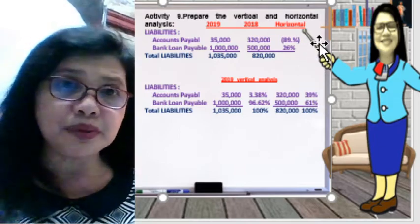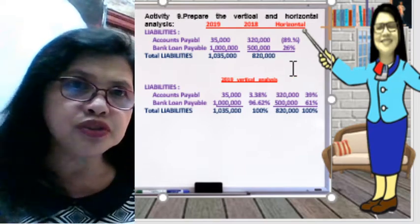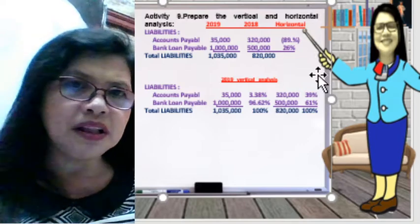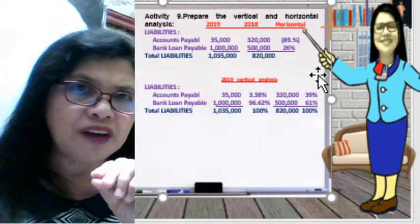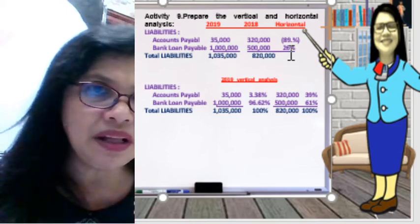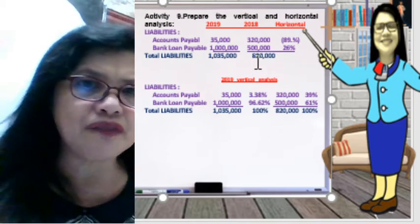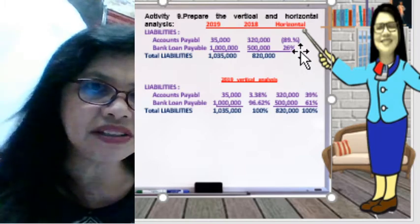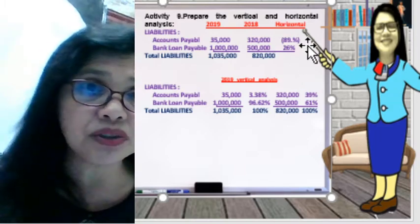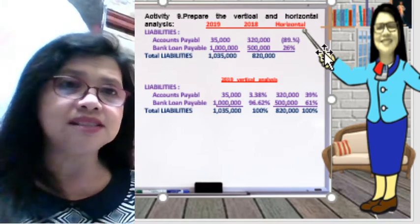For bank loans payable, we compare current year 1,000,000 minus previous year 500,000, divided by 500,000, which gives an increase of about 100%. That is the horizontal analysis — getting the increase or decrease of each account comparing the previous year to the current year.